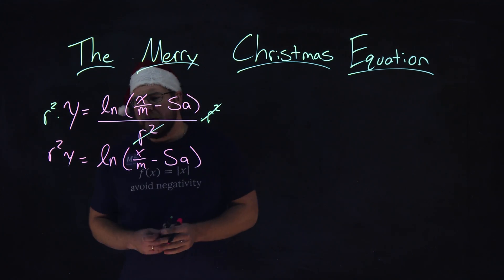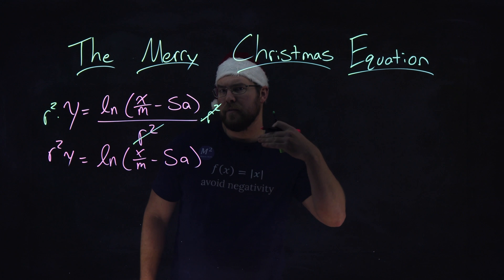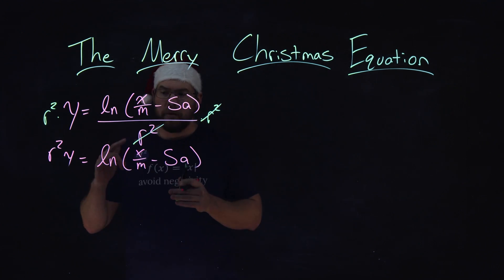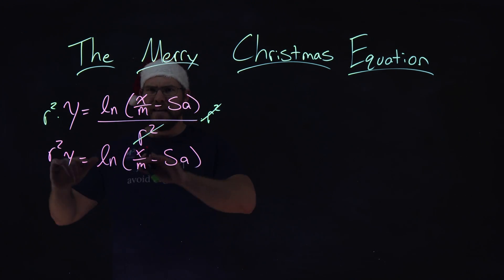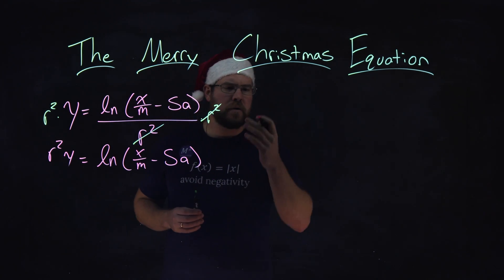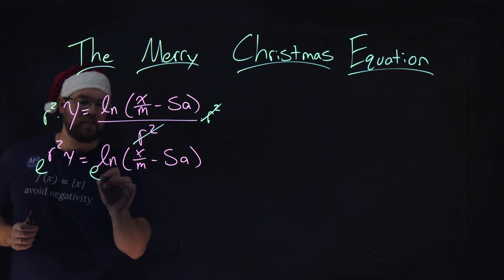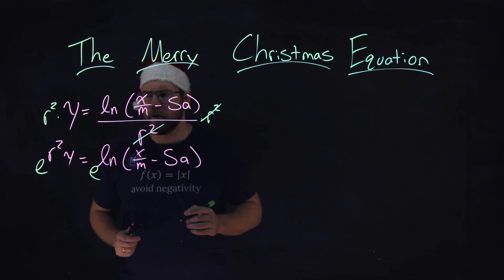All right. Now, natural log. The natural log is like a log base e. So, if I raise both sides to the e power, then I know I can cancel out that natural log. So, let's go do that here. So, I'm just going to take this and raise both sides to the e power.